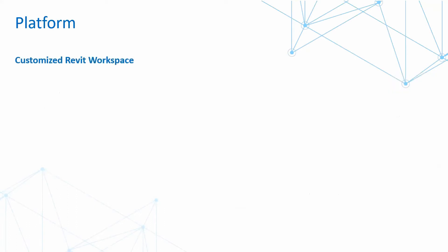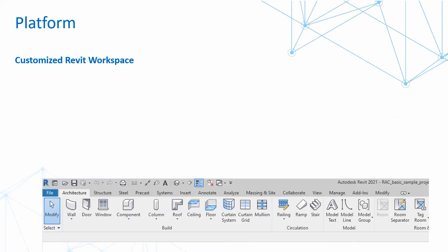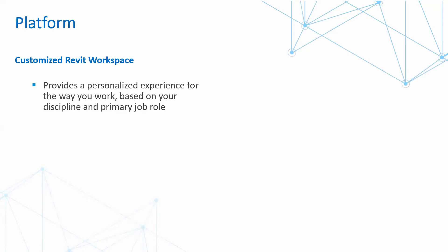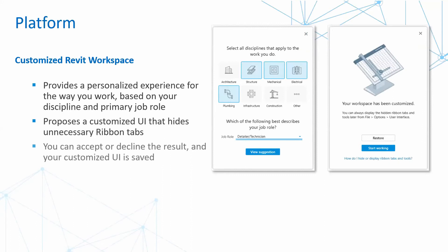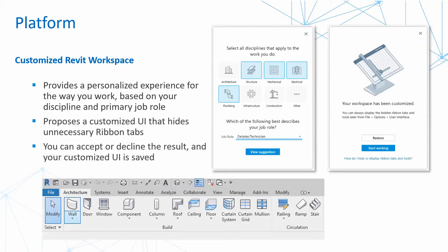Another item that has changed is the customized workspace within the Revit environment. You are used to seeing tabs for architectural, structural, steel, precast, and systems. Now we can provide a personalized experience based on your discipline and primary job role. You can propose a customized UI that hides unnecessary ribbons you do not need, by selecting the options panel and choosing what you want to show within your tabs and ribbon. Once you have chosen what you want, you can save or restore the settings to streamline your Revit workspace. For example, I only have architecture and systems showing as I don't deal with infrastructure, construction, or structural.